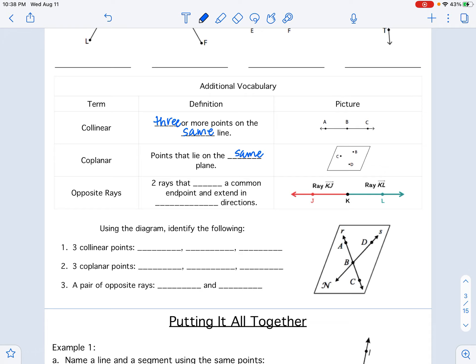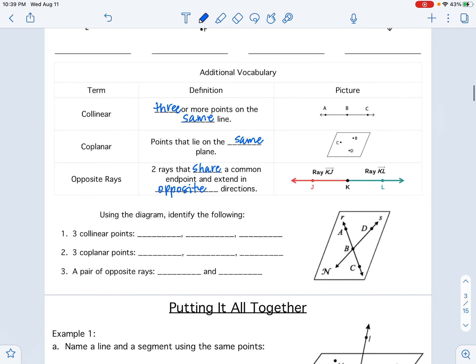And you also have opposite rays that share a common endpoint, kind of like an angle. But that angle or that endpoint then goes off in opposite directions. Opposite directions. So here we have ray KJ and ray KL. You see instead of making an angle, they make a straight line. So opposite rays will kind of always make a line for you. Or what we like to call a straight angle.